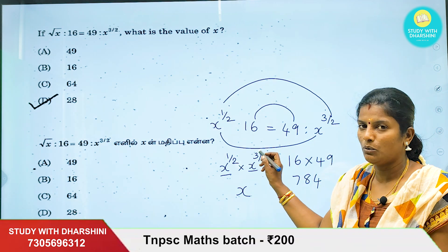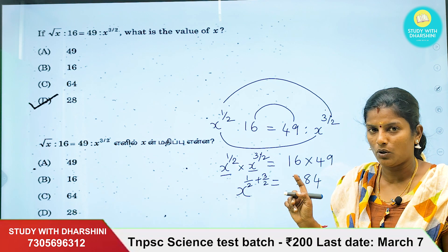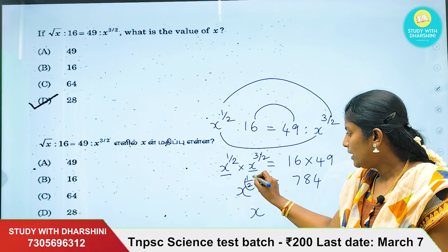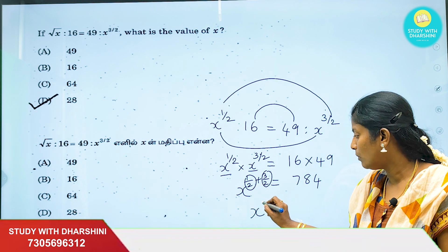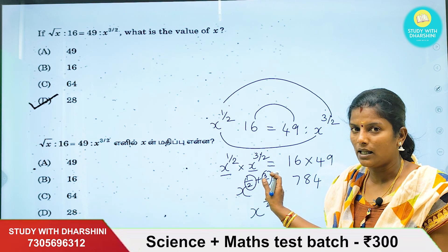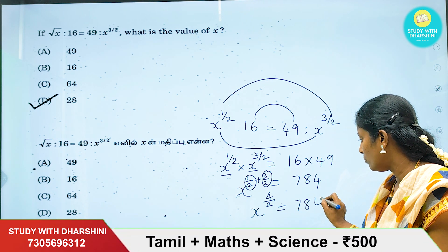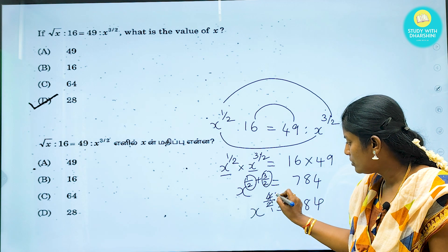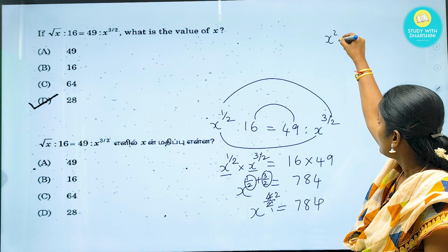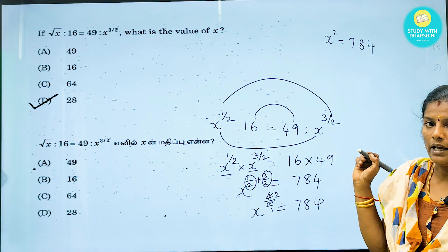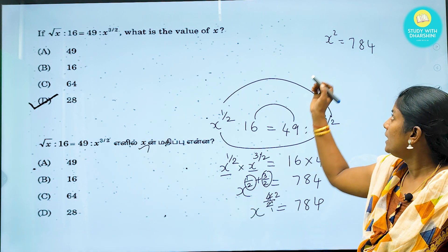By the rule, we add the powers: 1 by 2 plus 3 by 2 equals 4 by 2 equals 2. So x power 2 equals 784, meaning x squared equals 784.